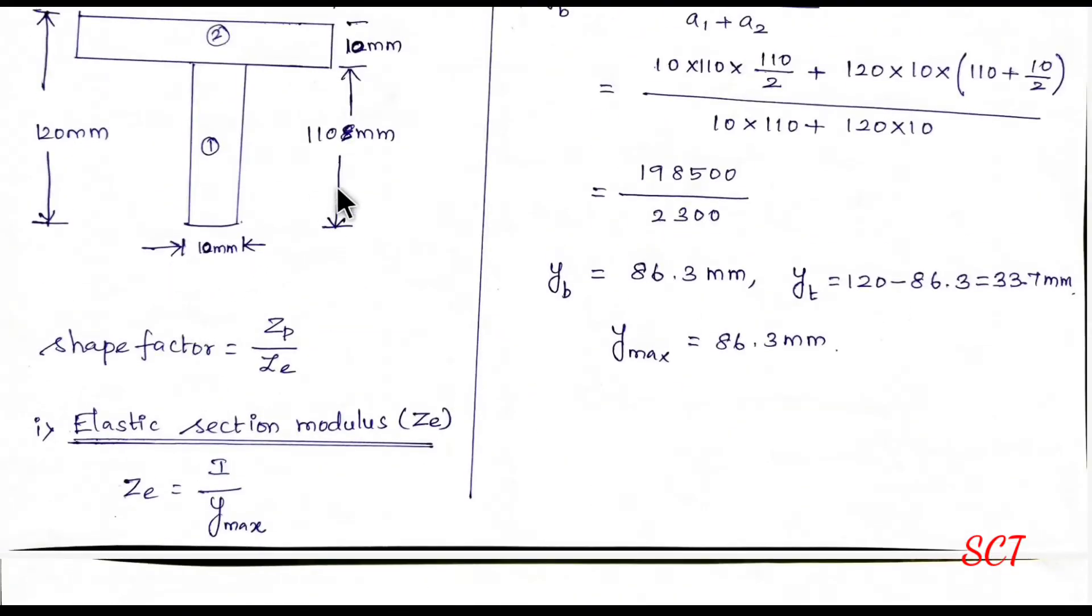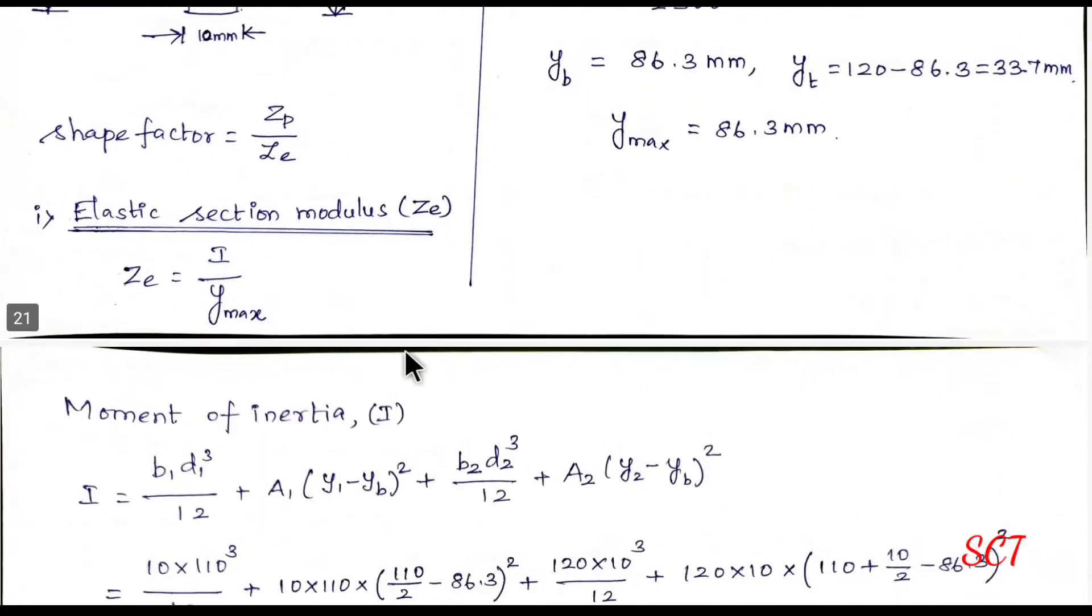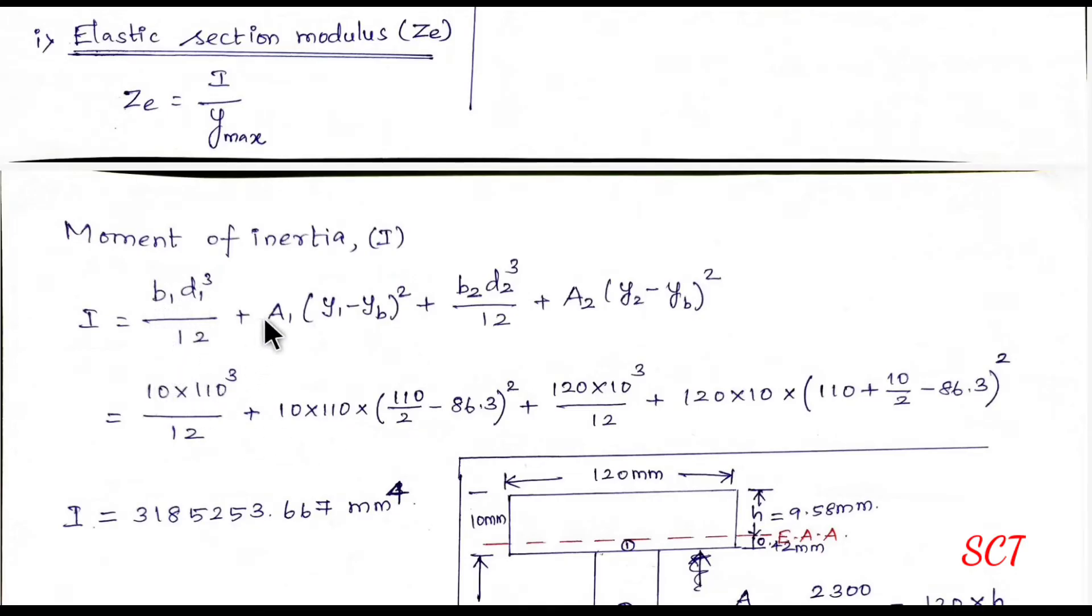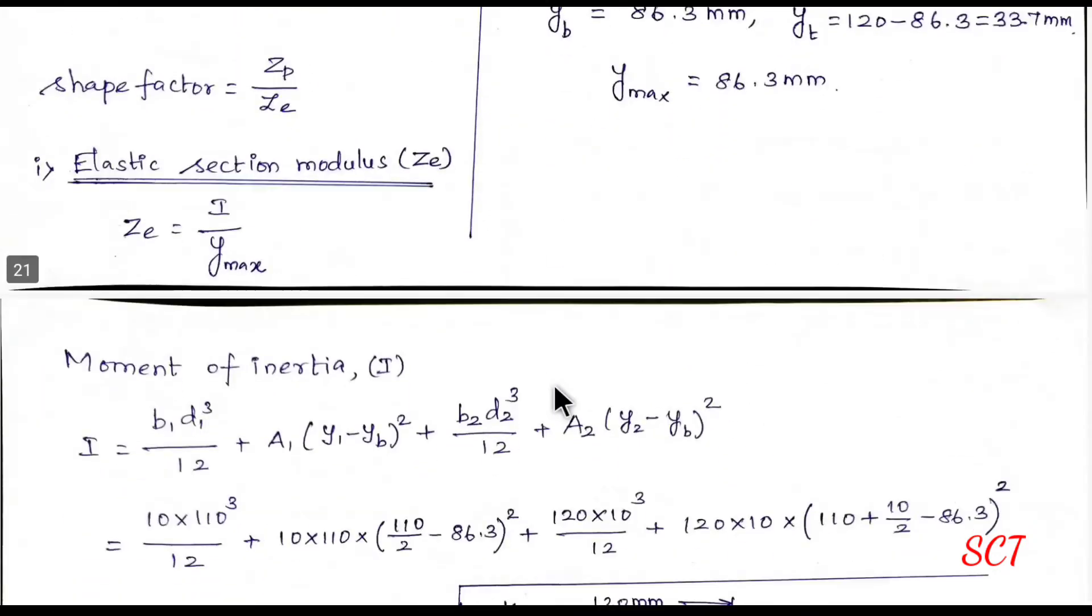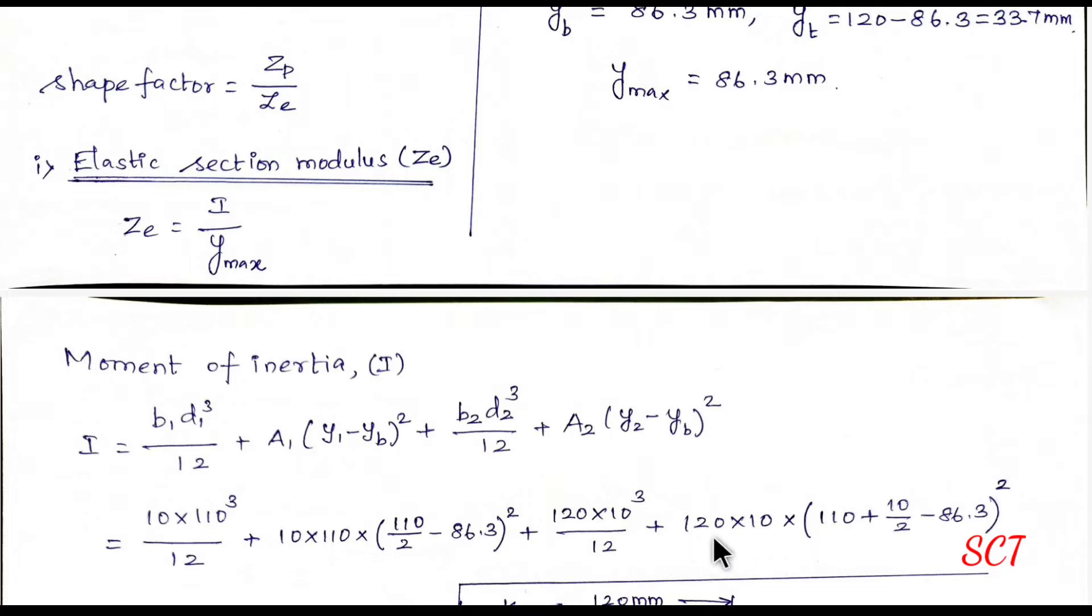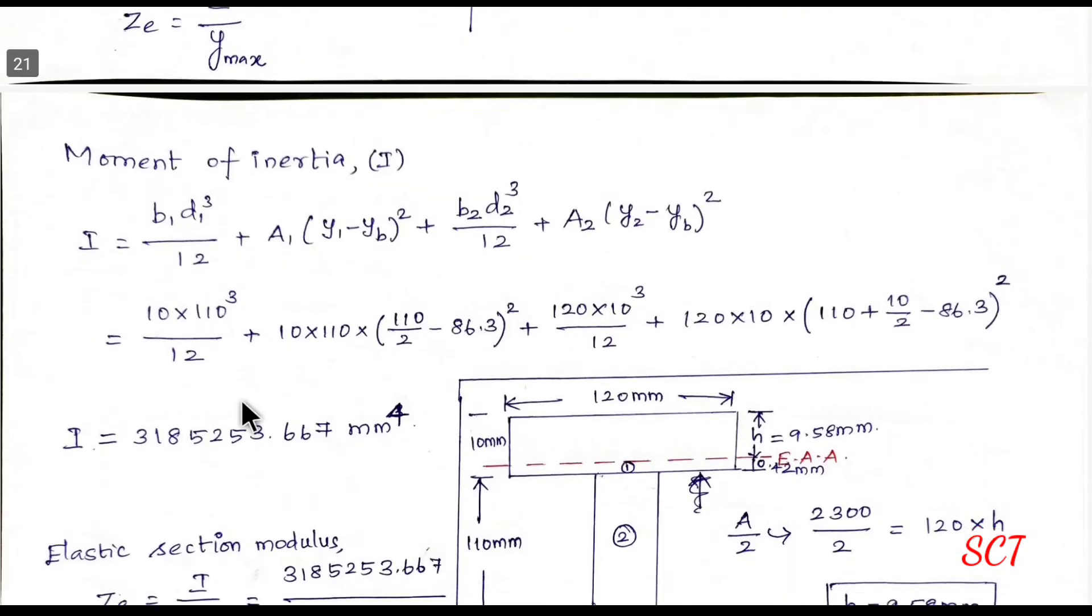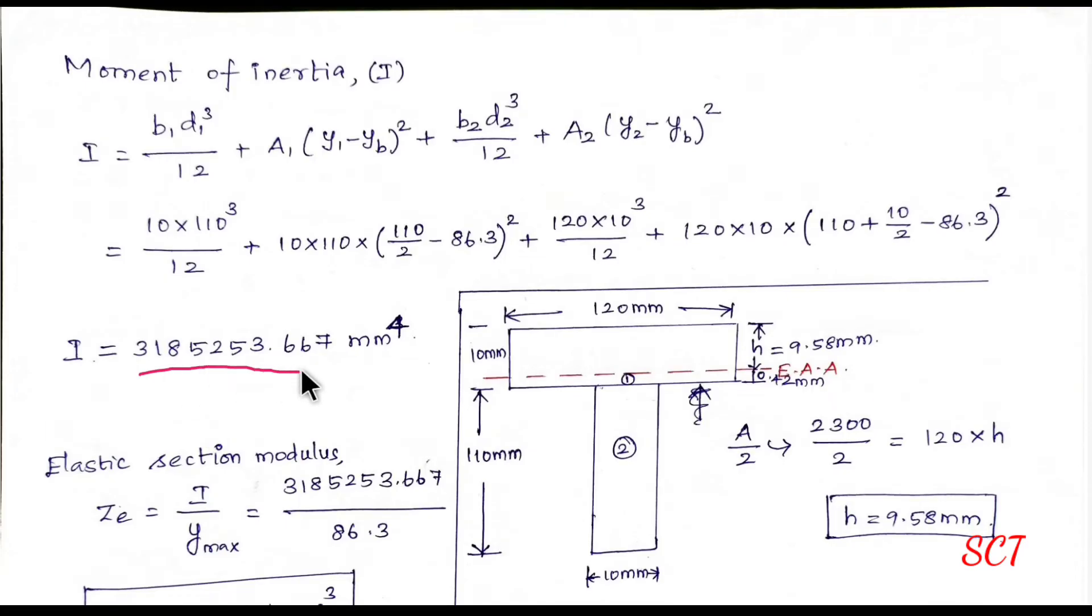So first, we can do it. So b1 value is 10, d1 value is 110. And the area value is 10 into 110, y1 value is 110. So b1 value is 10, d1 value is 110, y1 value is 110, yb whole value is 86.3. So this is how to do it. So b2 value is 120, d2 is 10. So 120 into 10 cube divided by 12 plus area 2, 120 into 10, y2 value is 110 plus 10.